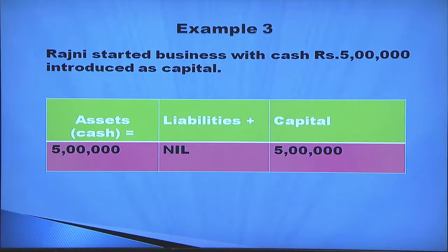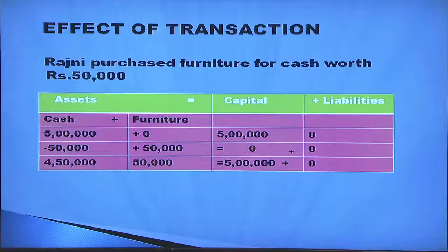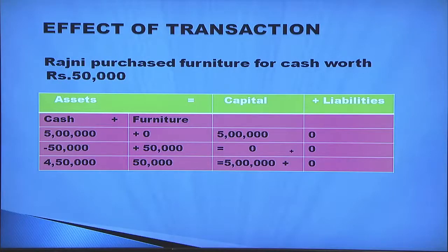Another example: Rajni started business with cash five lakh introduced as capital, so cash five lakh equals capital five lakh. Next, Rajni purchased furniture for cash rupees 50,000. Furniture is an asset, so it is added as another column. Cash is going from the business, so minus 50,000 in the cash column and plus 50,000 in the furniture column. The new accounting equation is cash four lakh 50,000 plus furniture 50,000, that is five lakh, equals capital five lakh.